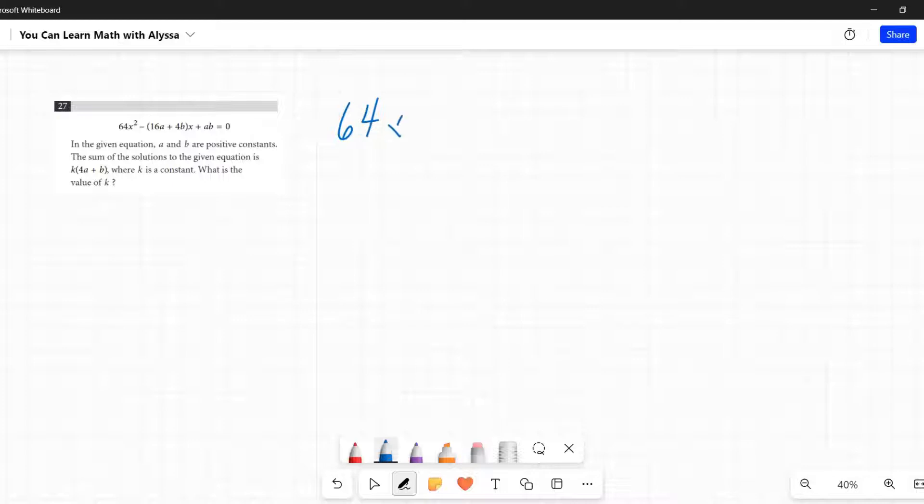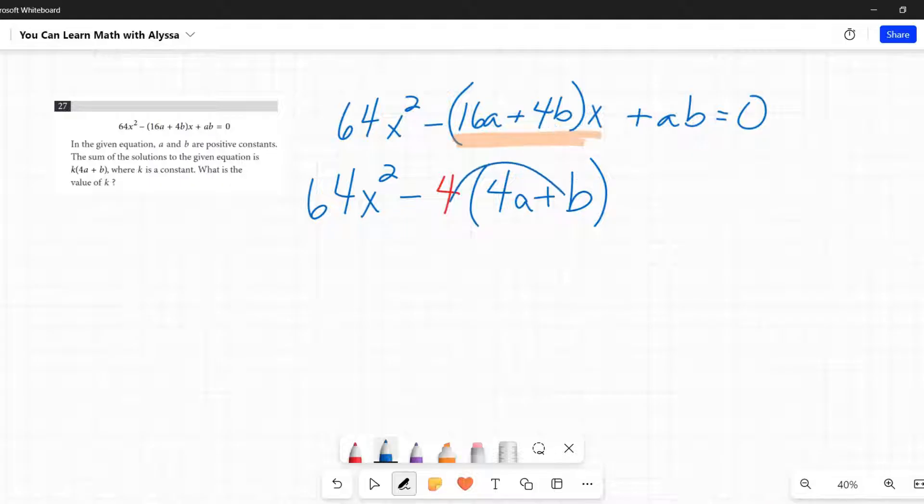Let's get started tackling this monster. 64x² - (16a + 4b)x + ab = 0. First things first, there is a greatest common factor here in this 16a + 4b, and I'm going to take that out. I'm going to pull out a four, which leaves behind 4a + b, because 4 times 4a is 16a and 4 times b is 4b. That x stays out there, then we have +ab = 0.